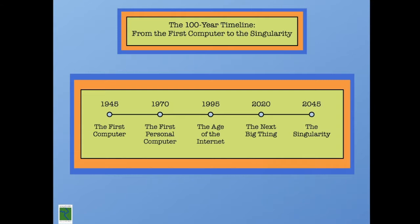Let's jump into the timeline. 1945 represents the first computer, a relationship between organization and machine. Approximately 25 years later, we see the first personal computer, a relationship between the individual and machine. And 25 years after that marks the age of the internet, indicative of this person-to-person relationship over machines.